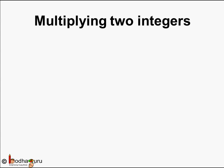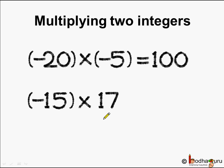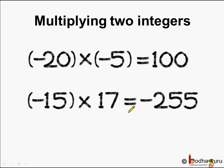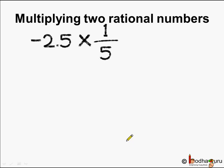What happens when we multiply two integers? Minus 20 multiplied by minus 5 — minus times minus becomes plus, so the answer is 20 multiplied by 5, which is 100. Next, minus 15 multiplied by 17 — minus times plus becomes minus, hence the answer is minus 255. The product is always an integer, so integers are closed under multiplication.